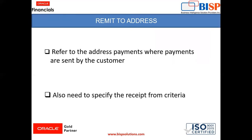Now, what is a remit-to address? A remit-to address is the address from where the payments are sent by the customer. When creating a remit-to address, we also need to specify the receipt from criteria. Receipt from criteria specifies the country from which we are receiving the receipt. These are small but important setups to move forward in the AR application.